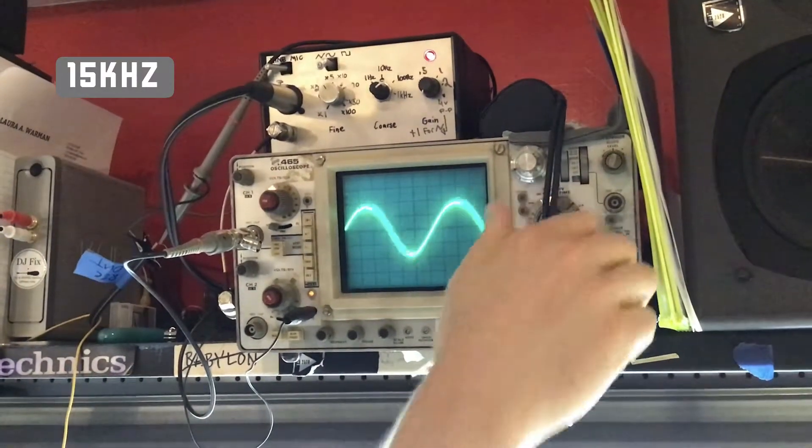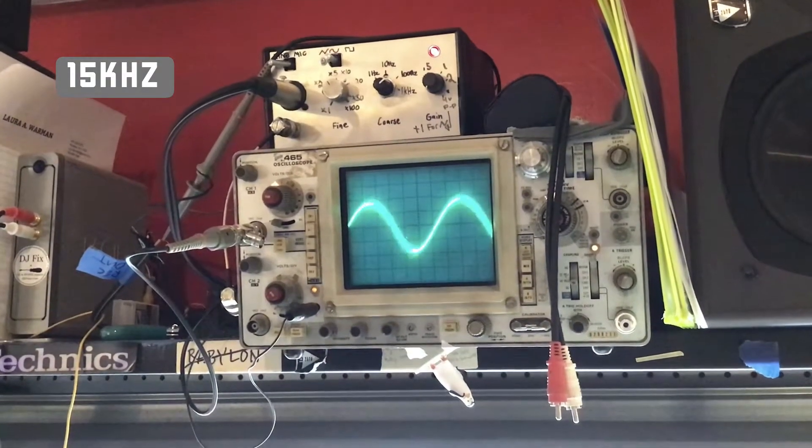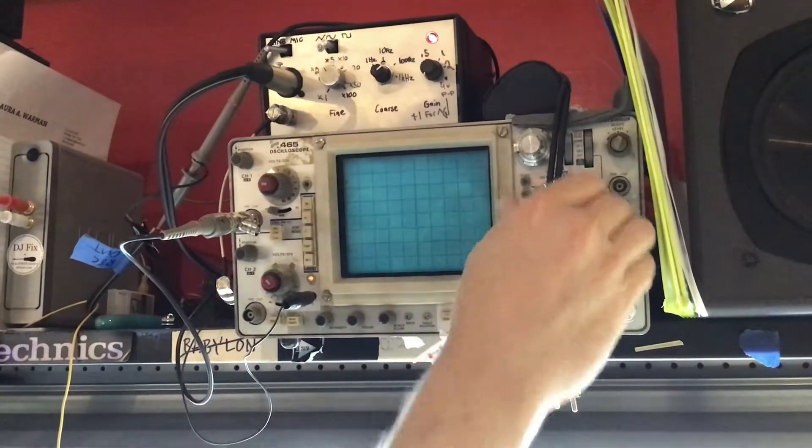15k, this is the upper range. So you can see it tests about the same volume level as our test tone, as a 1k test tone, and a little distorted, but not too bad.